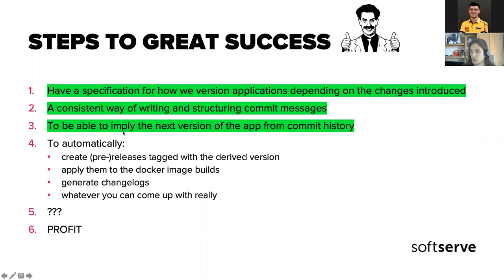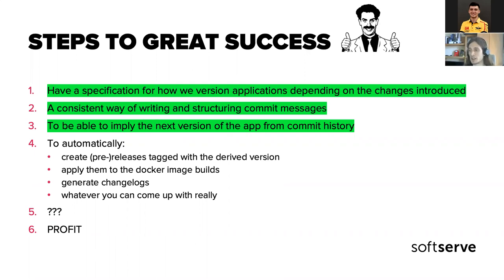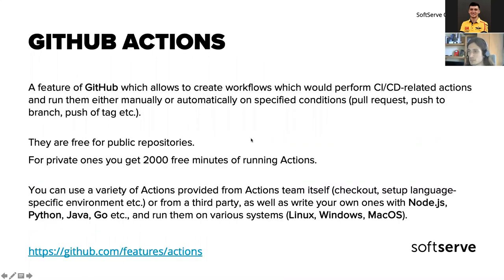We are now able to imply the next version of the app from commit history because every commit is going to tell us what changes we are introducing to the codebase. We can look at the commit history and see what's going on and what is the next version. How could we combine that? There is GitHub Actions — which is again the same as Azure Pipelines and GitLab CI/CD.